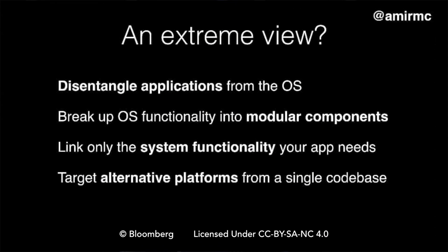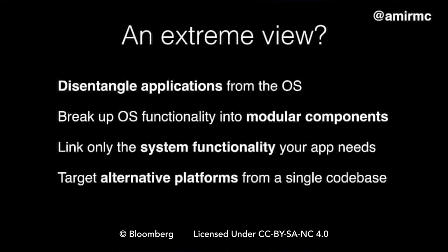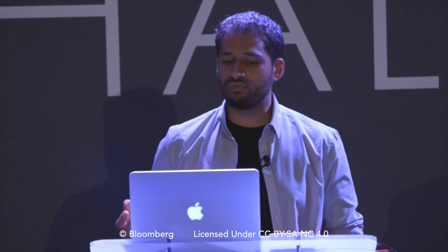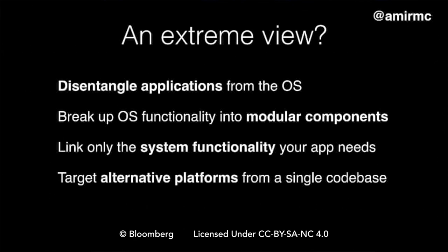But what if you took an extreme view? What if you went back and said: this is the world we live in, we're trying to deploy software — what should we do if we want to do it from scratch, take a fresh view? The first useful thing would be to disentangle applications from the operating system. If we can do that, it allows us to break up the operating system functionality into modular reusable components. Then you can take your application code and link it against only the system functionality your application actually needs to run, and exclude the rest. Once you have this collection of modular components, you should be able to retarget your application to work on different platforms from the single codebase — without changing your application code, deploy it to multiple different environments. And of course, this is where unikernels come in.